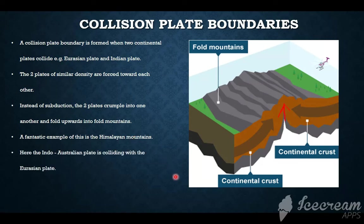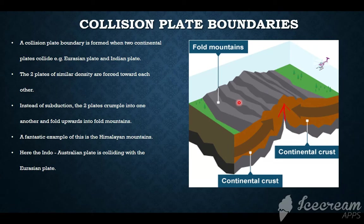The Indo-Australian plate is colliding with the Eurasian plates, creating the Himalayas mountain range. The two plates of similar density are forced towards each other — instead of subduction, the two plates crumble into one another and fold upwards into fold mountains. Mount Everest, the tallest mountain on Earth, is found along the Himalayas mountain range.